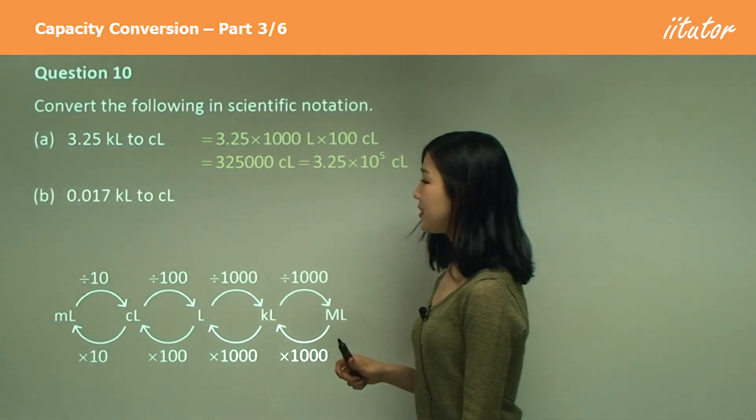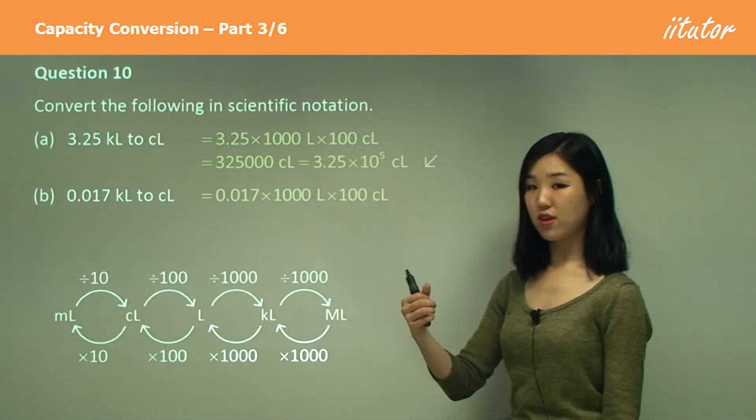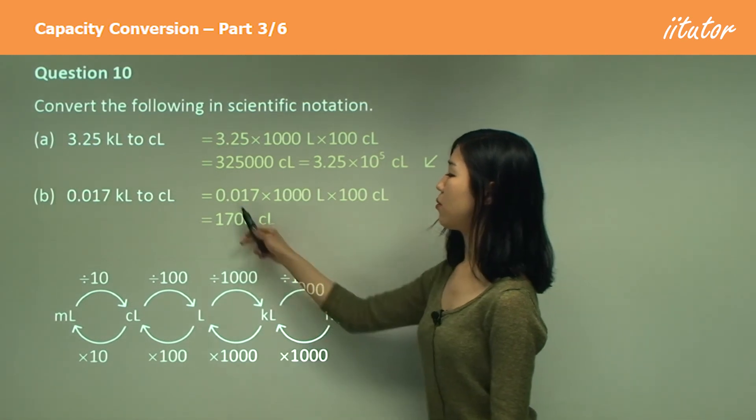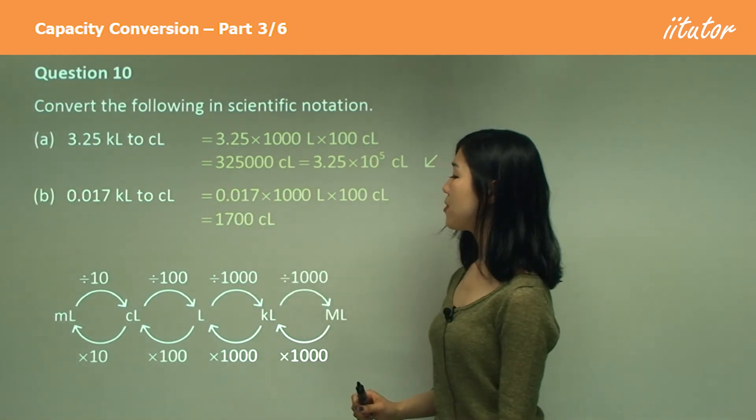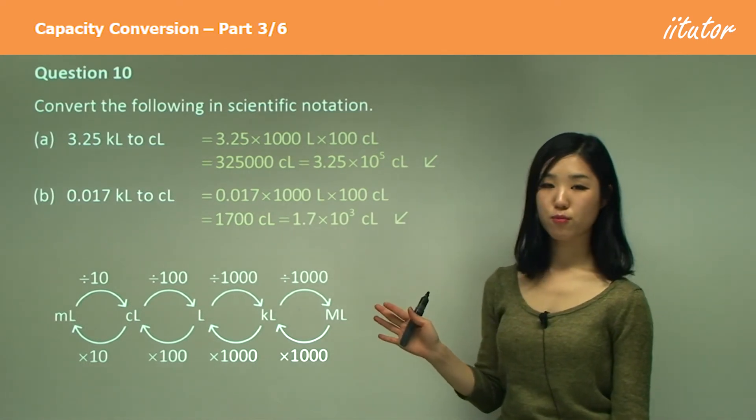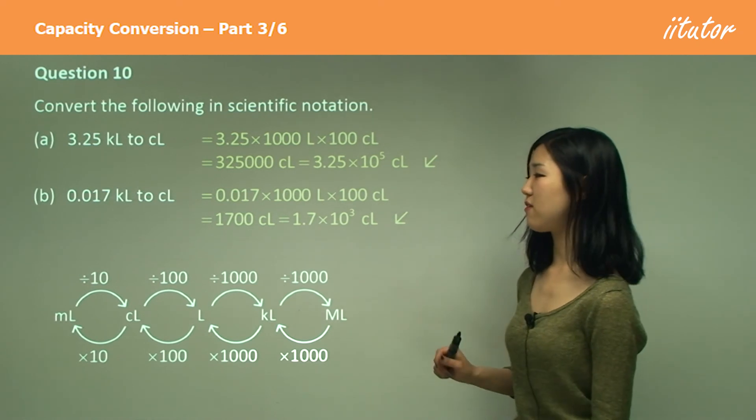Kiloliters to centiliters, again, same conversion: multiply by a thousand, and a hundred again. So it's going to look like this. One, two, three, four, five. So two extra zeros. Now put the decimal in front of one, you multiply by 10 to the power of three, okay? This stuff I think is very, very simple now.